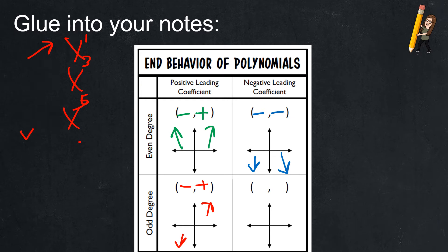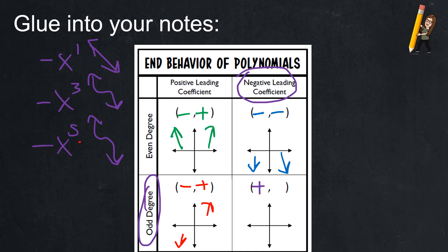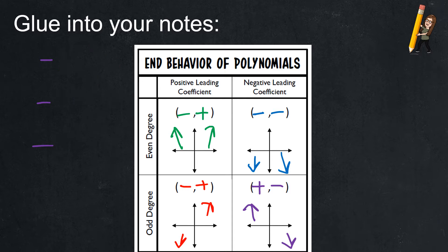For an odd degree with a negative leading coefficient — like negative x, negative x-cubed, negative x-to-the-fifth — that's a decreasing line, a decreasing S. The left side goes to positive infinity and the right side goes down to negative infinity. I'm visual, so the graphic makes more sense to me, and then I can imagine what might be in the middle. This helps because if I give you a function, you can draw the ends without any technology.